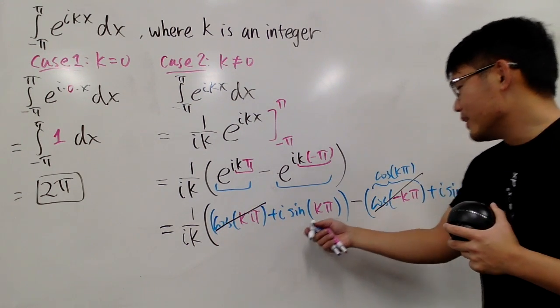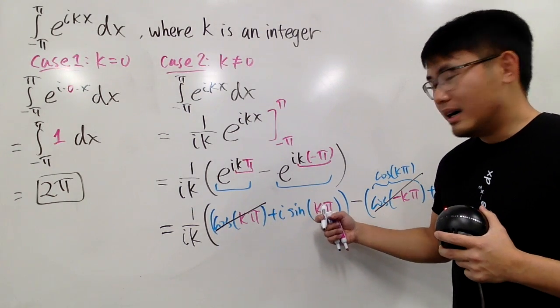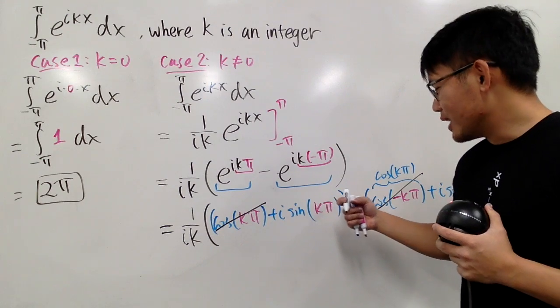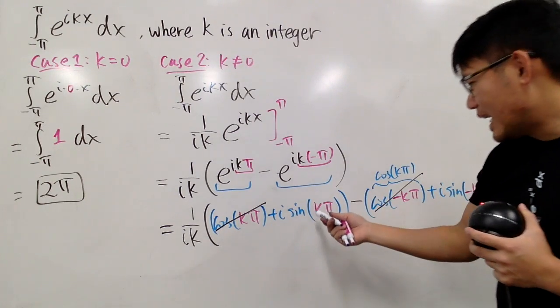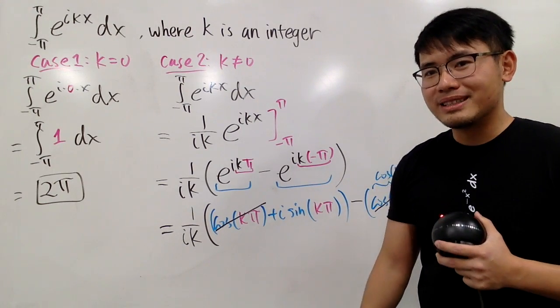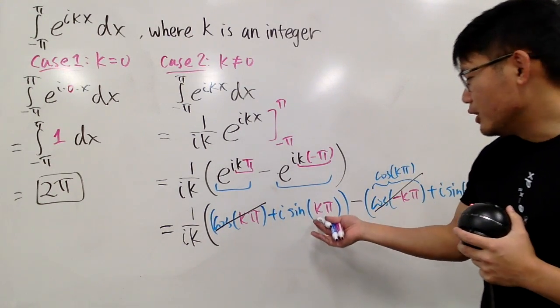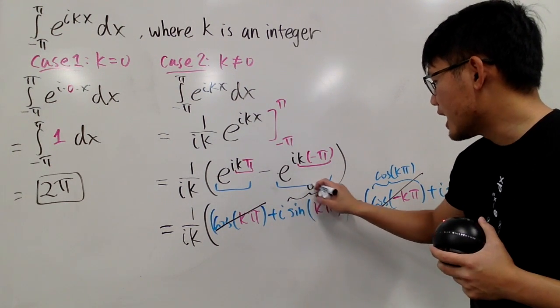Well, even though sine is odd, you know what? Sine of an integer multiple of pi. See, k is an integer. So, we have, you know, sine of 1 pi, 2 pi, 3 pi, and all that. Well, sine of an integer multiple of pi. This right here is just going to be zero all the time.